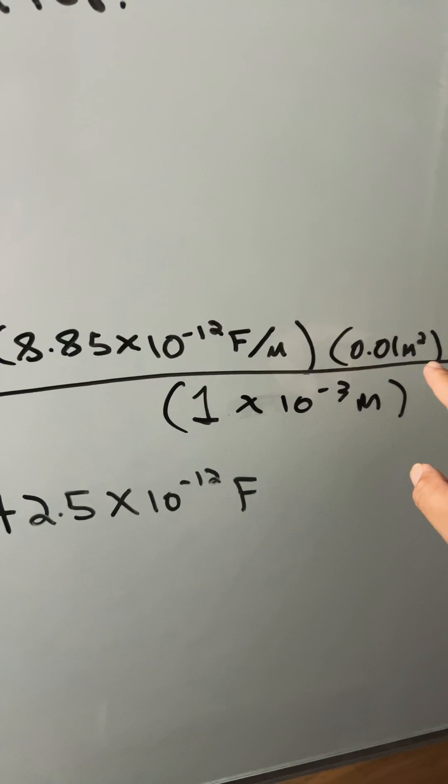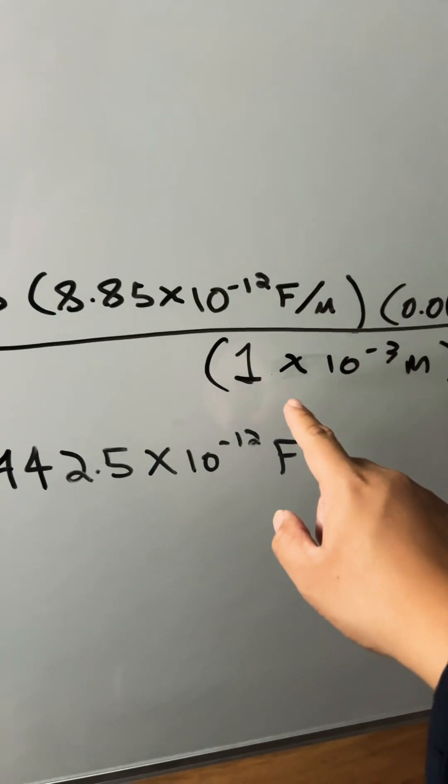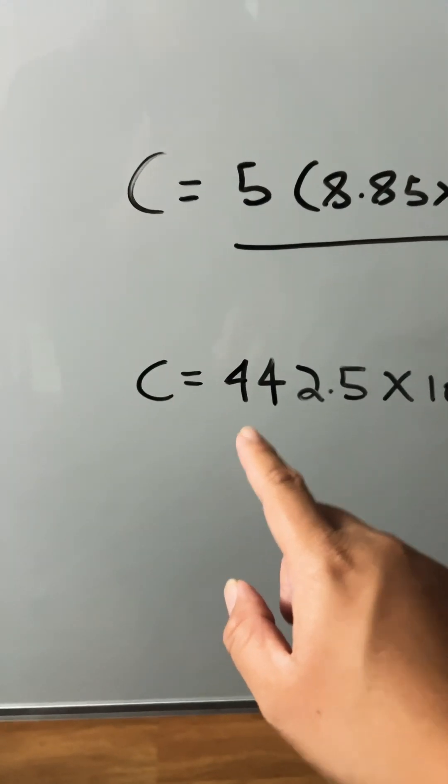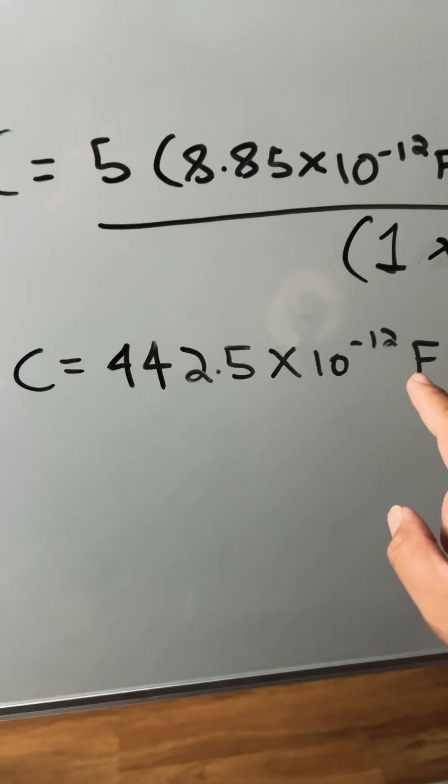times the area, which is 0.01 meter squared, divided by the distance, which is one times 10 to the negative three, which gives you for capacitance 442.5 times 10 to the negative 12 farads.